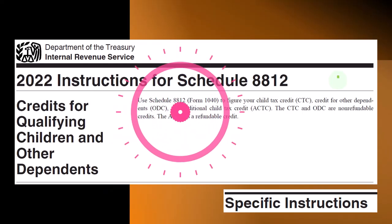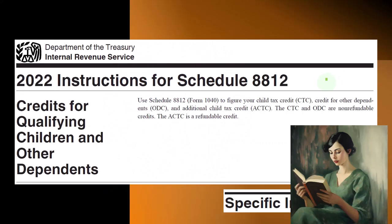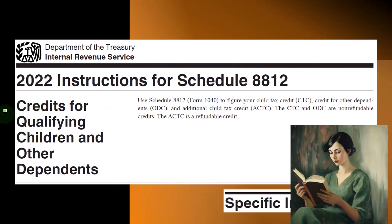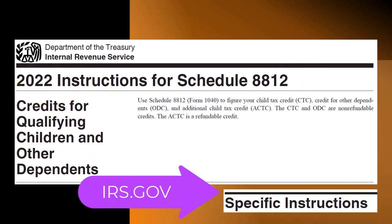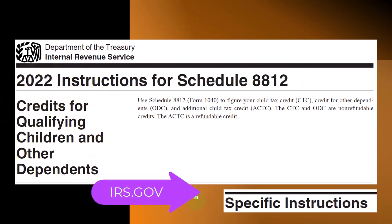Most of this information comes from the instructions for Schedule 8812, Credits for Qualifying Children and Other Dependents, Tax Year 2022. The specific instructions can be found on the IRS website, irs.gov.